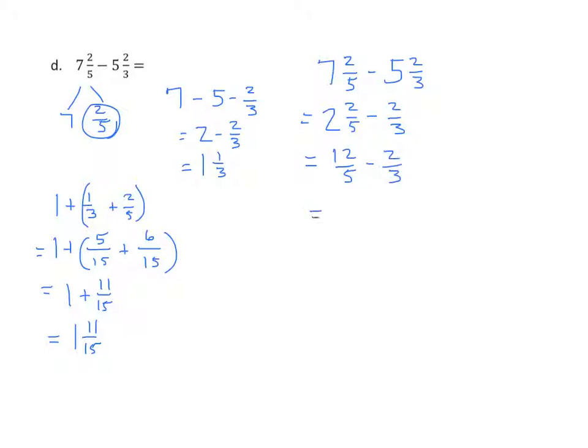The common unit is fifteenths. And we have 36 fifteenths in place of 12 fifths. And we have 10 fifteenths in place of 2 thirds. We find the difference, and we get 26 fifteenths. We can decompose that into 15 fifteenths plus 11 fifteenths, giving us 1 and 11 fifteenths.